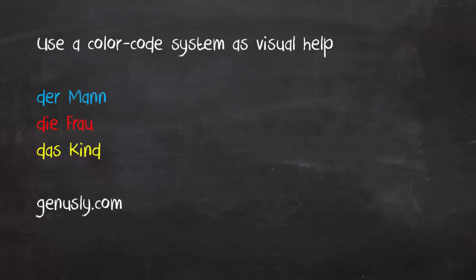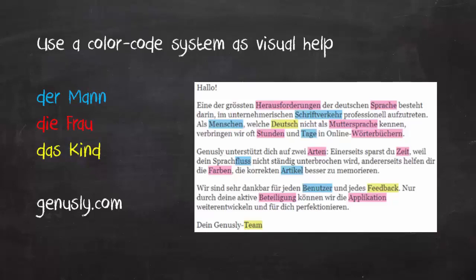I recently came across a website called genusly.com. It tells you the grammatical gender of a German noun as you type it in a text box on their homepage. This is how it looks: it colors masculine nouns in blue, feminine nouns in red, and neuter nouns in yellow. The benefit is that it saves you time because it doesn't interrupt your cognitive flow — you don't have to look up words you're unsure about; the website tells you immediately after writing the word. The color visualization helps you learn and memorize the German gender classification more easily. Check it out — it's a really helpful tool.